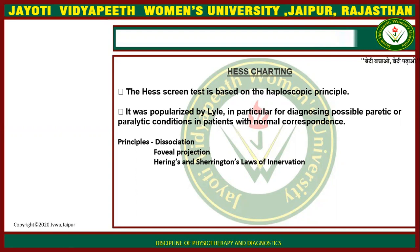The principle of Hess charting is dissociation of foveal projection and Hering's and Sherrington's laws of innervation. This means dissociation of the two eyes and projection of the image on the fovea. Hering's law states that equal innervation is given to both eyes in the same manner.